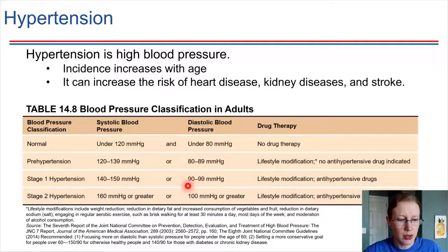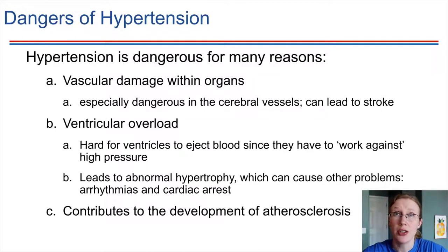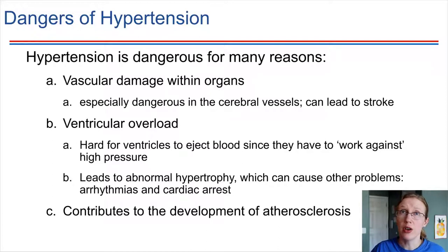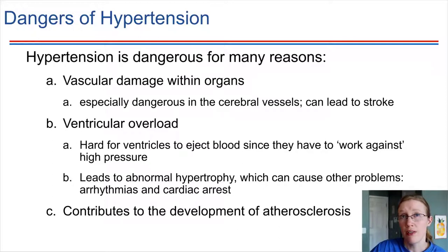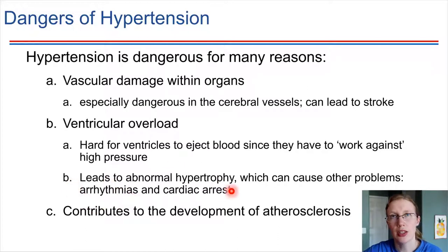Consistently elevated blood pressure is something concerning that should be treated, either with lifestyle changes or with drugs. It can cause vascular damage — if blood vessels are always under high pressure, this leads to damage over time. It can also cause changes within the heart: high blood pressure means high peripheral resistance, so the heart has to work harder. Since the heart is a muscle, it will grow larger over time — this is called hypertrophy. This can lead to arrhythmias, irregular electrical signaling in the heart, and ultimately a heart attack.